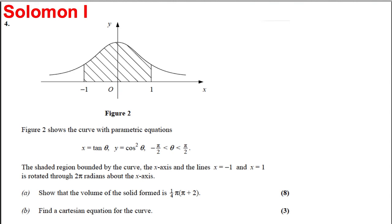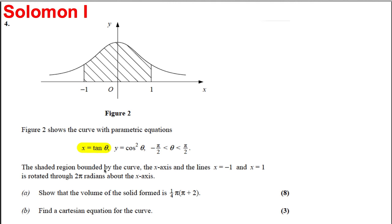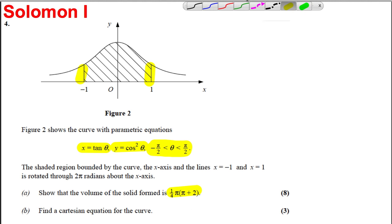Here's another parametric integration question. We have a parametric curve where x is tan theta and y is cos squared theta. Theta can be between negative pi by 2 and positive pi by 2. The shaded region is bounded by the curve and the x-axis and the lines x equal 1 and x equal negative 1, and it's rotated 2 pi radians about the x-axis. Find the volume of revolution and find the Cartesian equation of the curve.